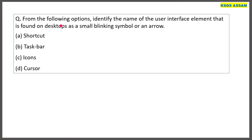From the following options, identify the name of the user interface element found on the desktop as a small blinking symbol or an arrow. The answer is a cursor.